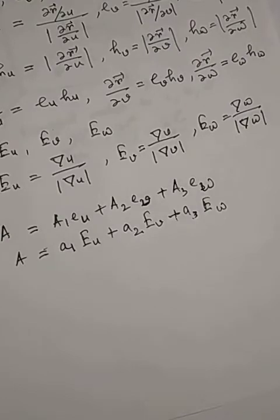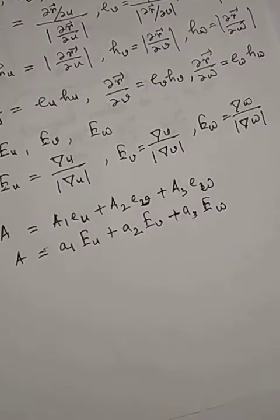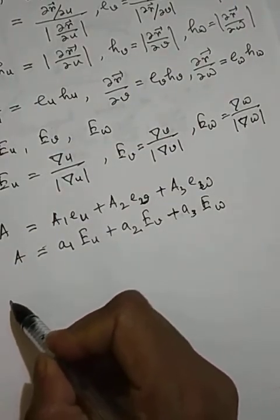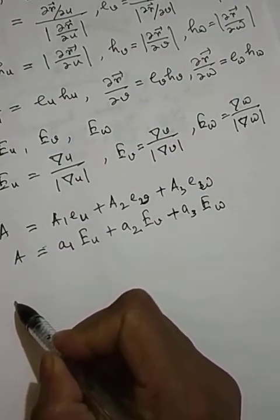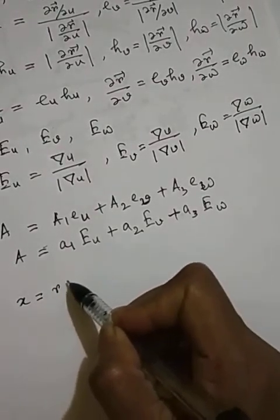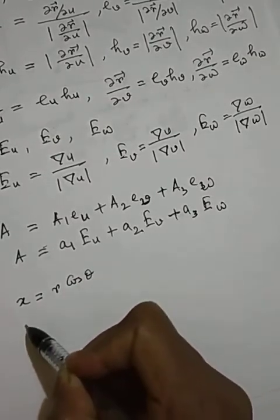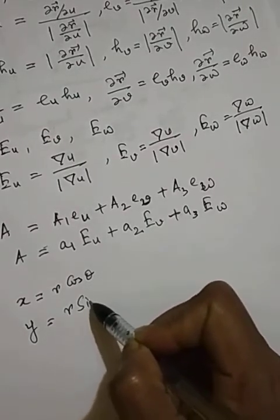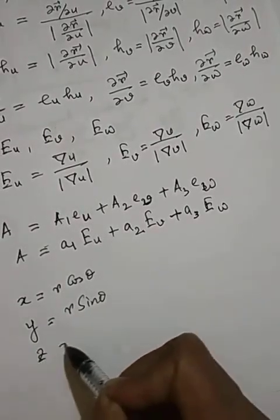Earlier we have discussed Cartesian coordinate transformation to cylindrical and spherical. So here, if we take the cylindrical coordinate transformation then x equals to R cos theta, y equals to R sin theta, z equals to z.